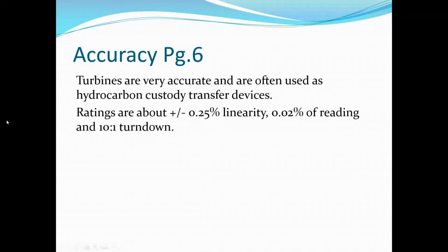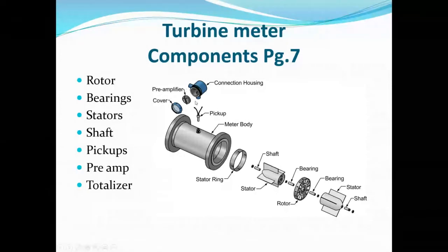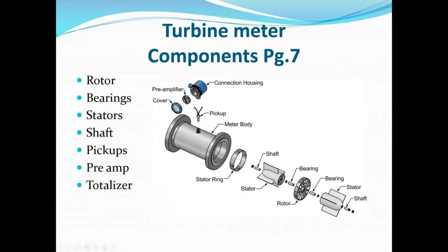Looking at turbine meter components: there is a meter body, a stator ring, and the stator — the components inside the body supporting the shaft that supports the rotor. Within that are bearings. Also the rotor, shaft, and body. Of course, some type of pickup, and then a transmitter which usually has a preamplifier to amplify the relatively small signal generated by the pickup so the transmitter can use it.